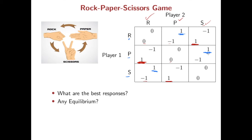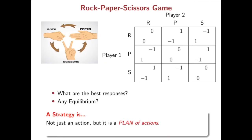Unfortunately, we cannot find any equilibrium in this game. So what do we have to do? We are going to extend the definition of strategy. A strategy is not just an action, but it is a plan of actions before you actually play. A randomization can be a plan of actions — this randomization is what we call a mixed strategy.